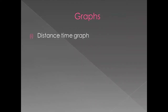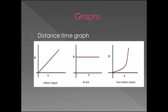Graphs. In a distance-time graph there are three types. First, when the graph is parallel to the time axis, it means the object is stationary. Second, when it is inclined to the x-axis or time axis, it shows uniform motion. Third, when it is a curved line, it shows non-uniform motion.